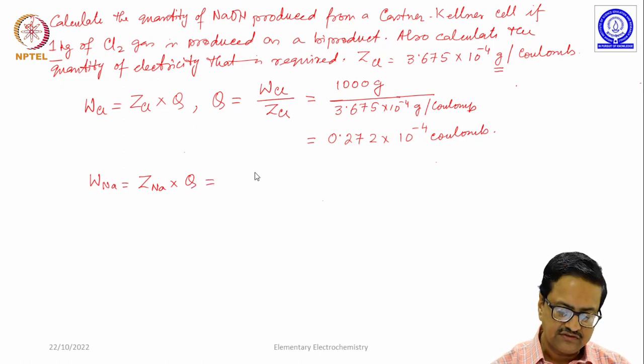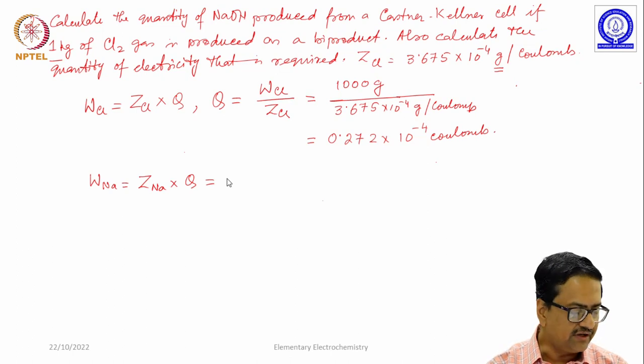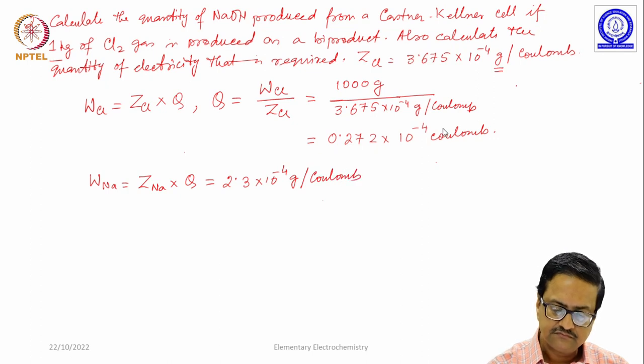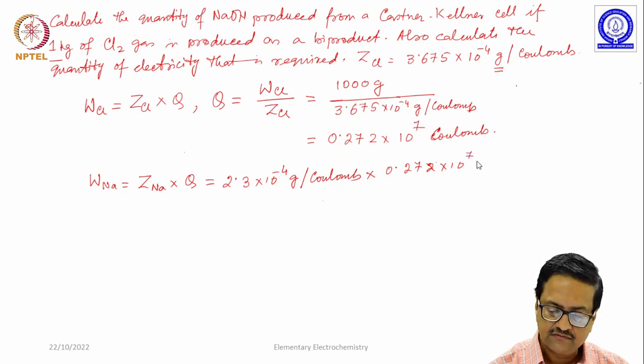We need to find out this value of z_sodium from the electrochemical tables available in various textbooks. This z_sodium is 2.3 × 10^-4 gram per coulomb multiplied by 0.272 × 10^7 coulombs.